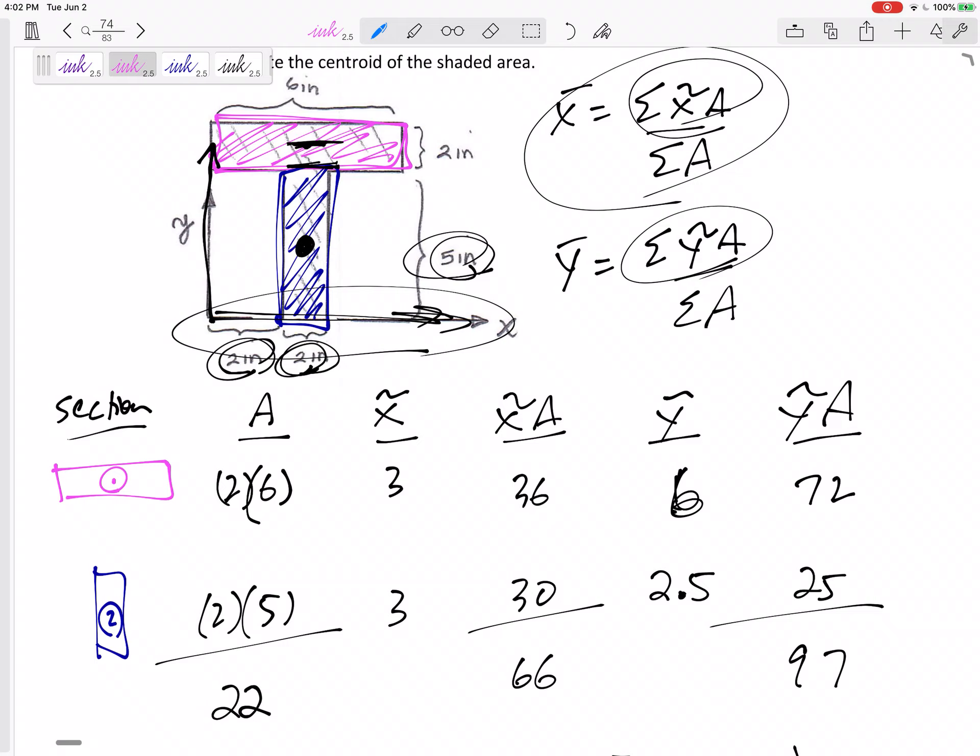3 would be right down the middle here. And 4.41, if this is 5 inches, yeah, yeah, it'd be right up there. I think that makes sense that the centroid of both shapes together would be right up there.